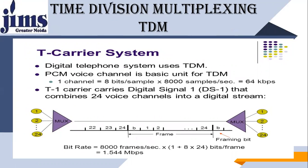In the T-carrier system used in Time Division Multiplexing, the digital telephone system uses TDM with pulse code modulation. Voice channels are the basic unit for TDM. In this PCM system used for voice communication, one channel equals 8 bits per sample, and we take 8,000 samples per second, giving us 64 kbps. The T1 carrier carries Digital Signal 1 (DS-1), which combines 24 voice channels into a digital stream.